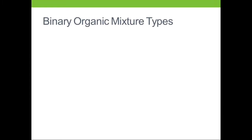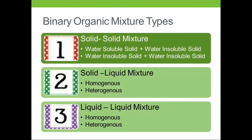What do we understand by a binary mixture? A binary mixture is a mixture having two components. Depending on the physical type, it could be a solid-solid mixture, a solid-liquid mixture, or a liquid-liquid mixture. The solid-solid mixture is the syllabus for semester 5, and in semester 6 we will deal with the solid-liquid and liquid-liquid types. The focus of this video is the separation of a solid-solid mixture.